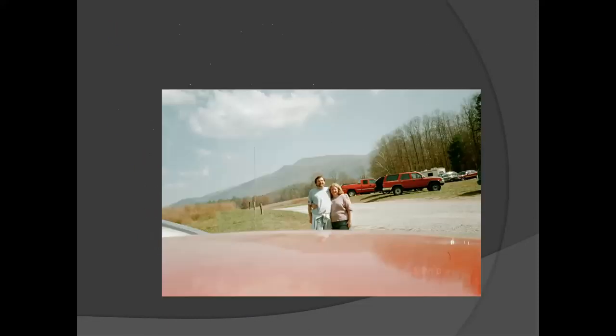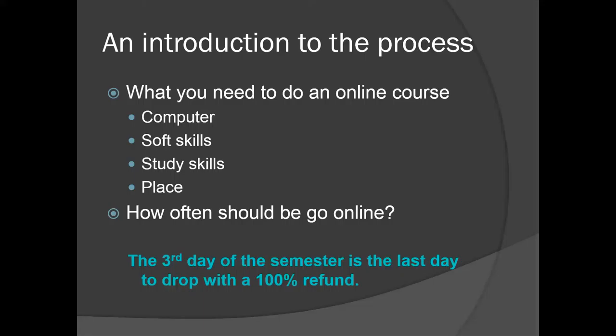Now we need to catch up. An introduction to the process — what do you need for an online course? Well, you need a computer. You also need a place where that computer is. Ideally, you should have a computer in your room or away from other people. A computer in the family room where other people will be is going to be difficult to work and study. You need a relatively fast computer. If you watch YouTube videos and you don't see the loading circle all the time, things should go well. We do a lot of stuff that takes a lot of bandwidth.